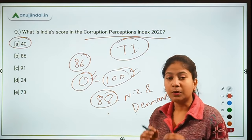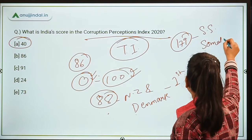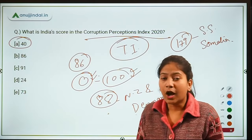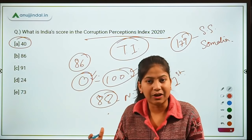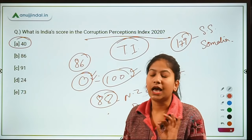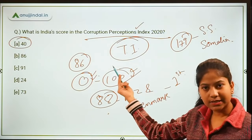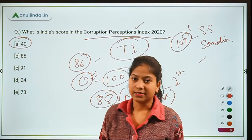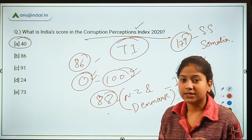The country at the bottom of the index is ranked 179th — South Sudan and Somalia are at the bottom. As for the parameters used in this index, it is a combination of 13 different surveys undertaken by Transparency International. No specific individual indicator or parameter has been named. To summarize: the organization is Transparency International, the top-ranked country is New Zealand and Denmark with a score of 88, the bottom countries are South Sudan and Somalia, and India's rank is 86 with a score of 40.